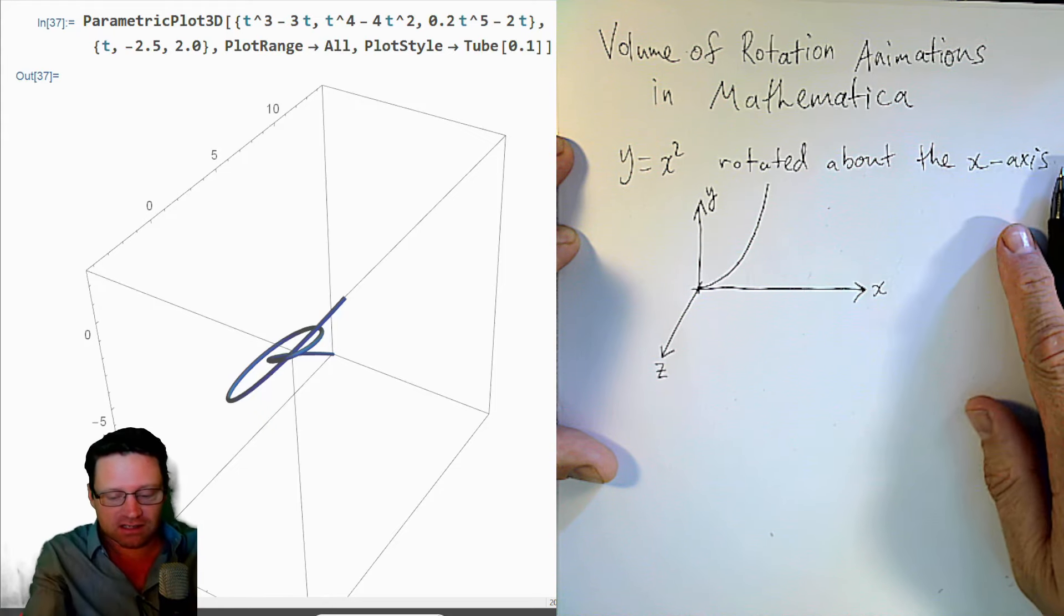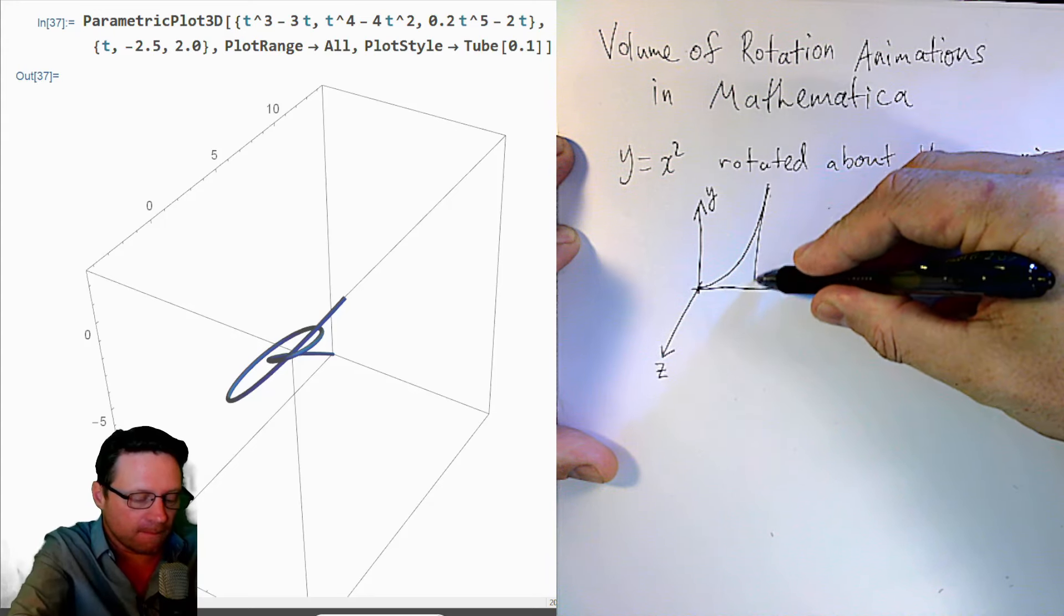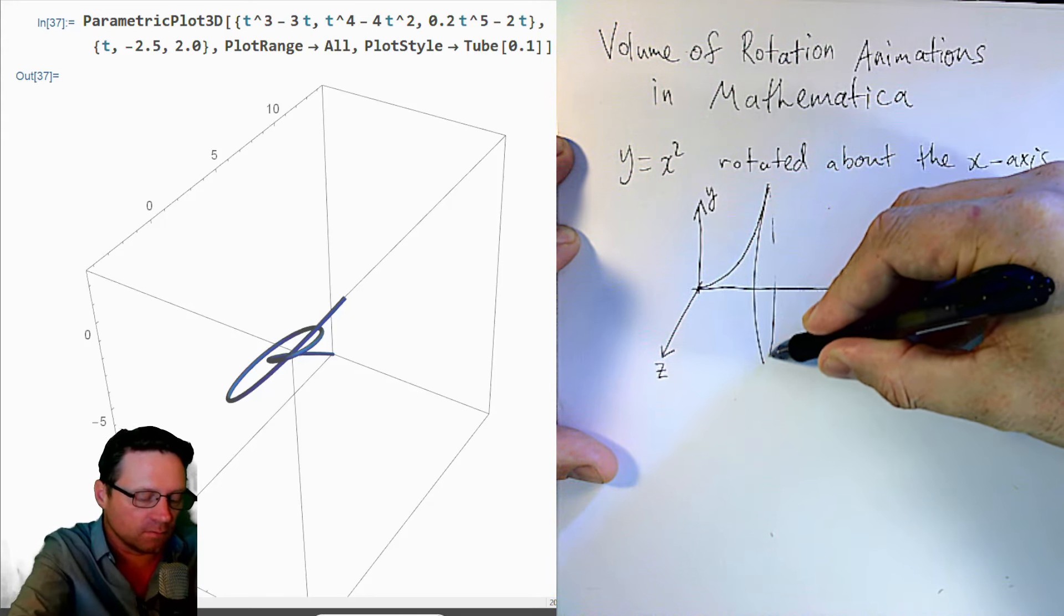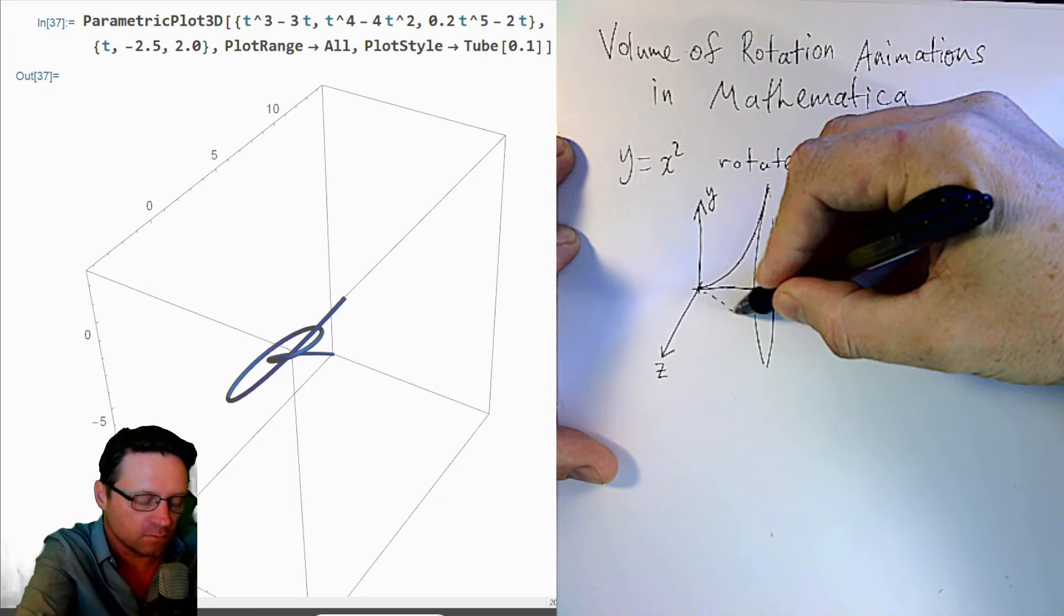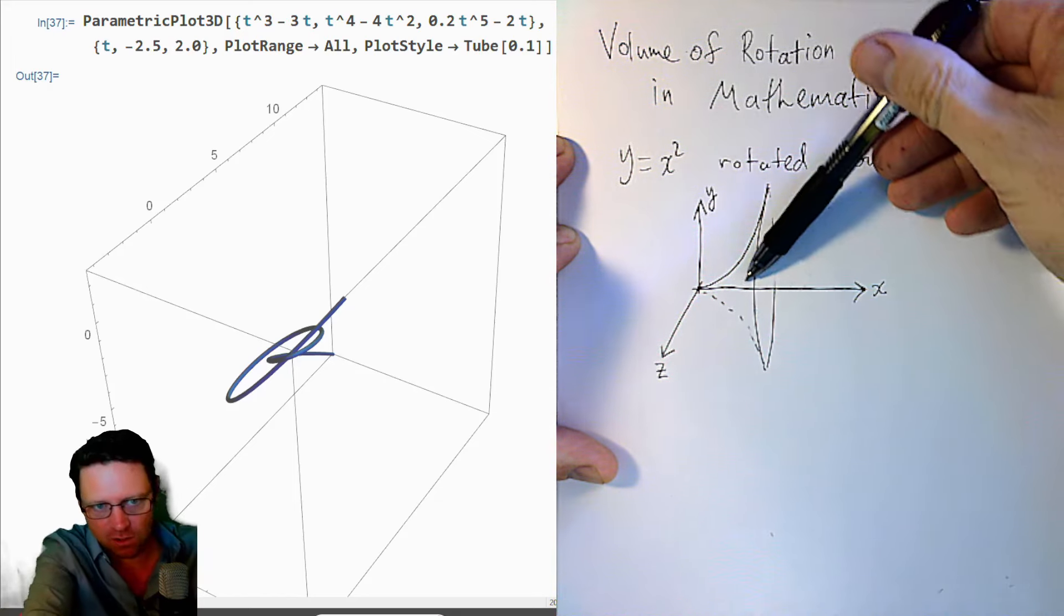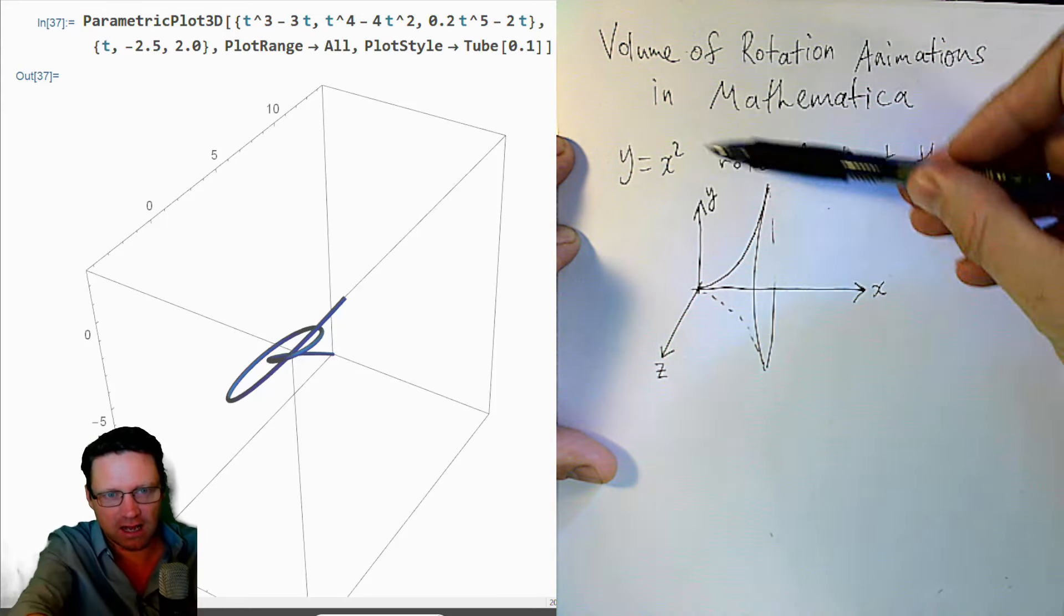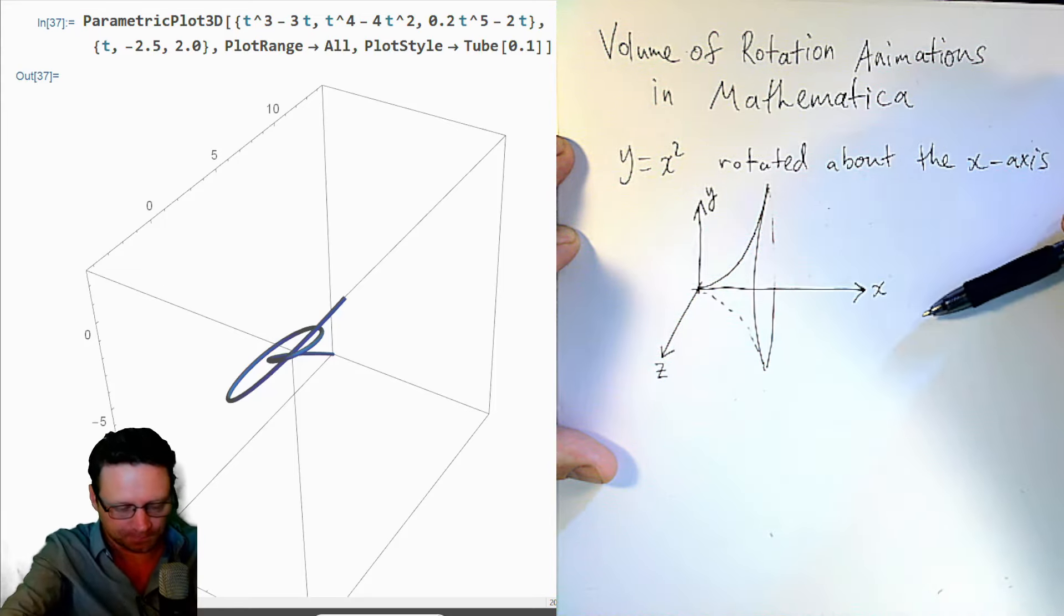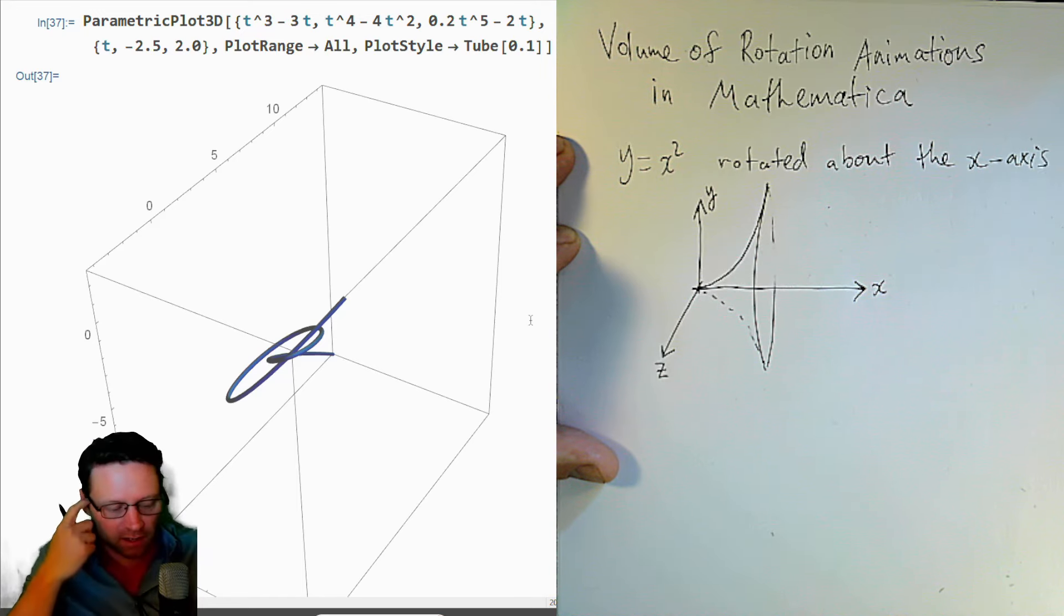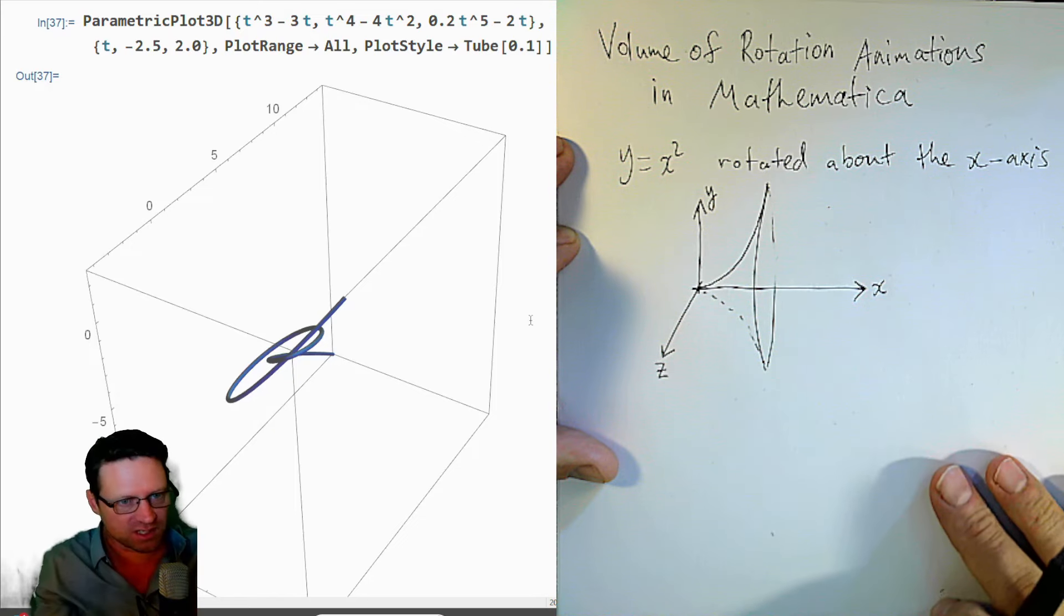Now, how do we do this in Mathematica? So this is what we will form, this bowl. But I want to actually show this curve spinning around in an animation. So what I need to do is find a way to plot this in a parametric plot much like what you see on the left.